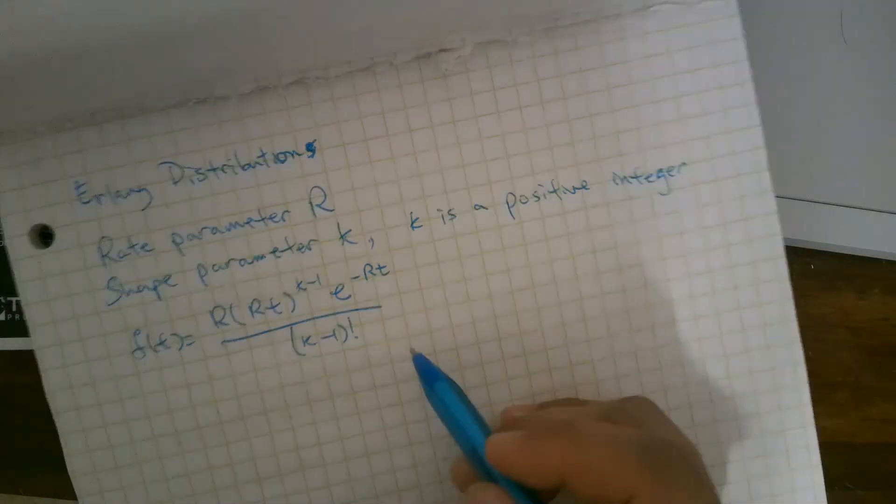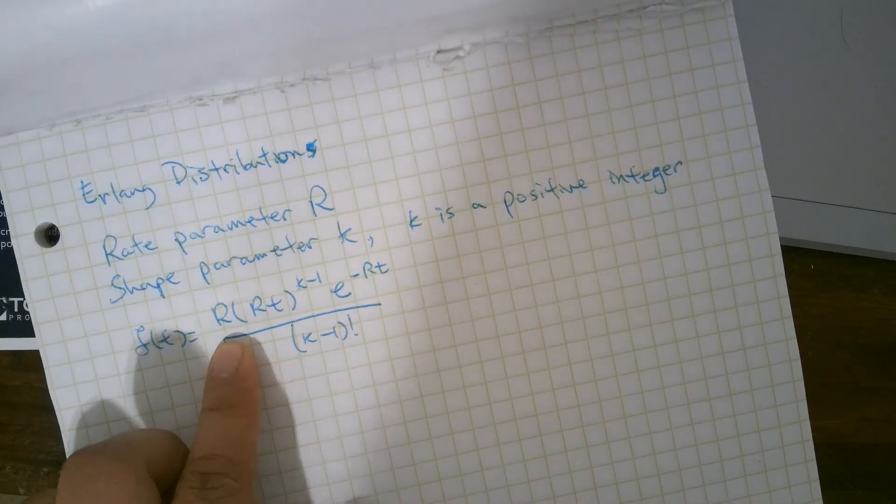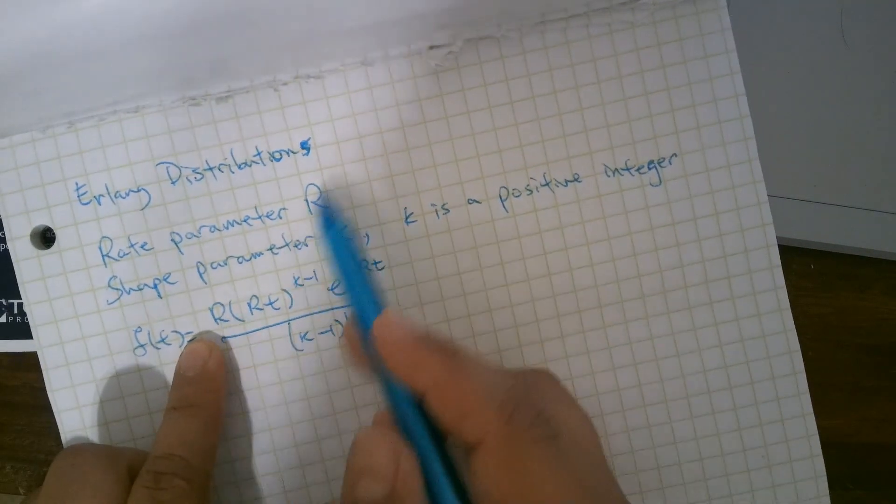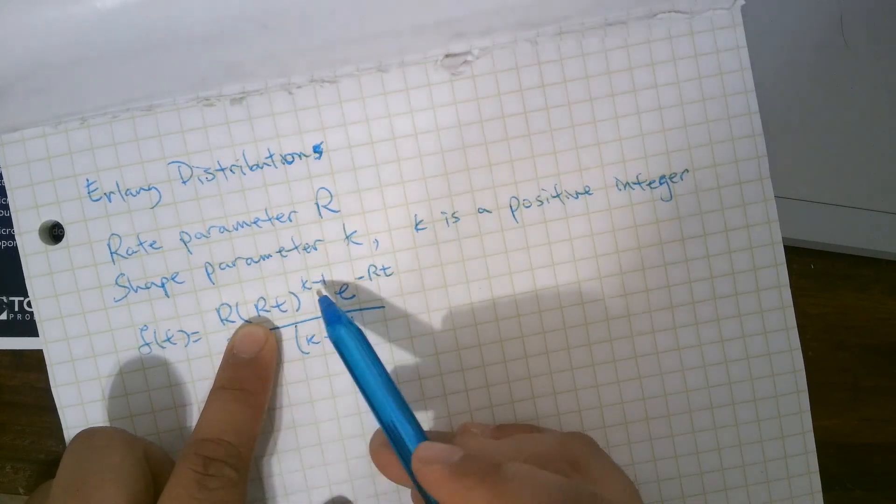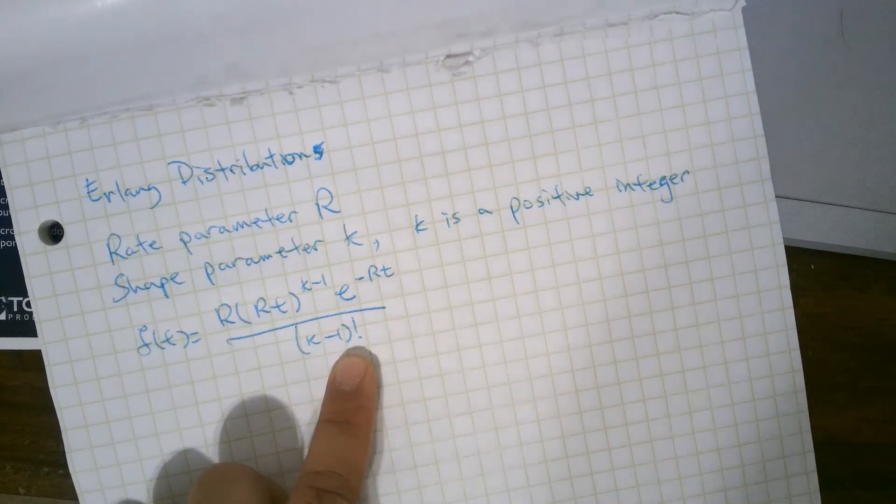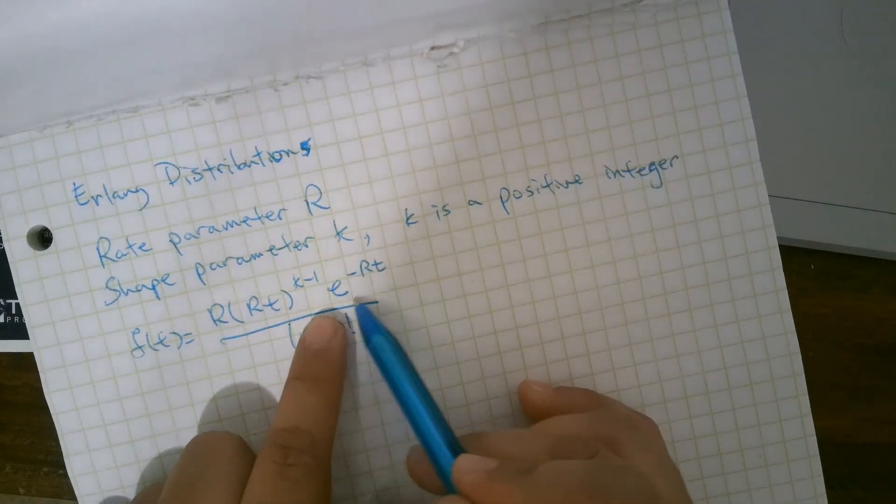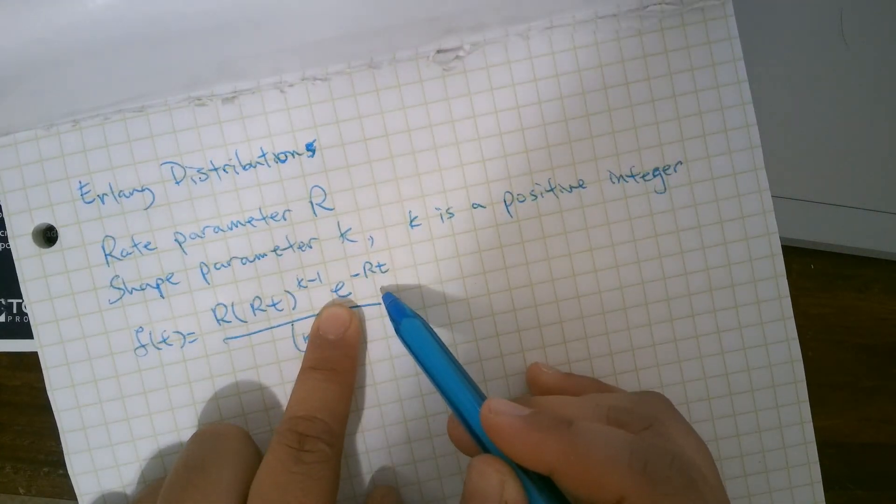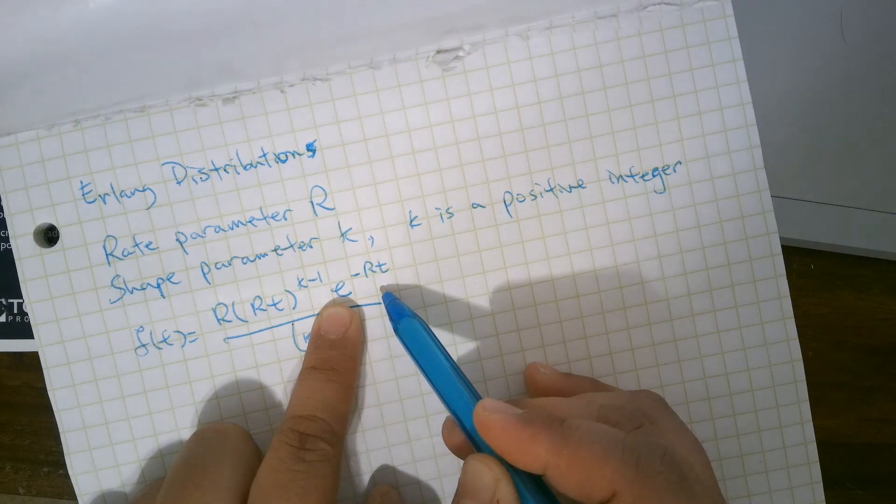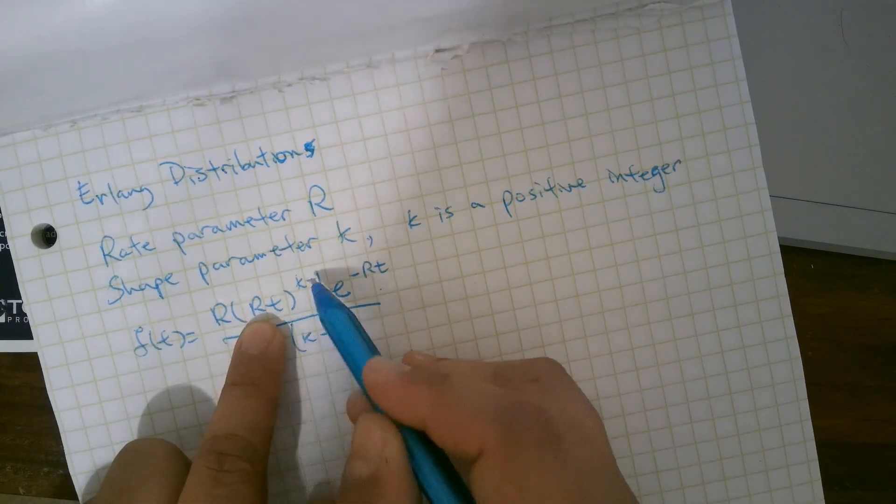However, we can just look at what's important here. R is a constant, some rate parameter. R to the K minus 1 is still a constant. K minus 1 factorial is a constant. Here's our original exponential distribution from before. And so the only new thing is this T to the K minus 1.